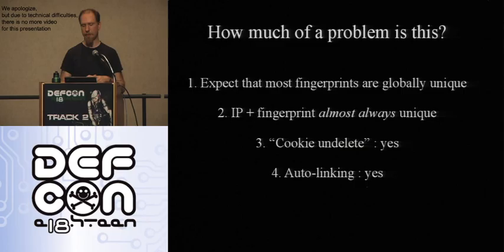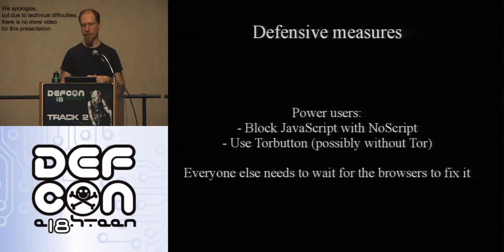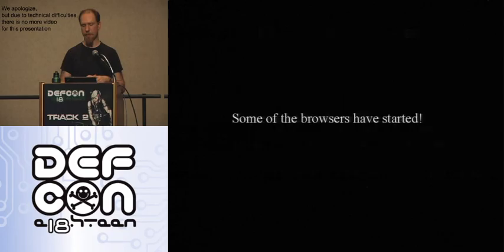In summary, we identified four kinds of attacks using fingerprinting. In many cases browsers appear globally unique. With an IP address plus a fingerprint, you're almost guaranteed to be trackable. You can definitely restore deleted cookies and link browsing across websites — this is a serious privacy problem. Right now the only mitigations are things power users will do: NoScript, Tor button. You can't tell less technical users to install these plugins, so everyone else needs to wait for browsers to find a solution.